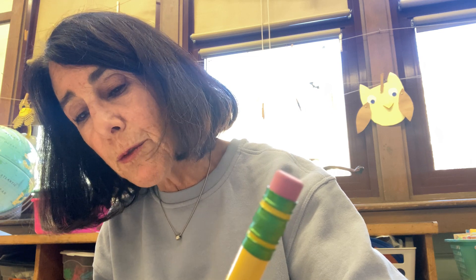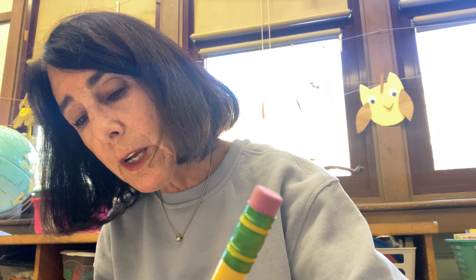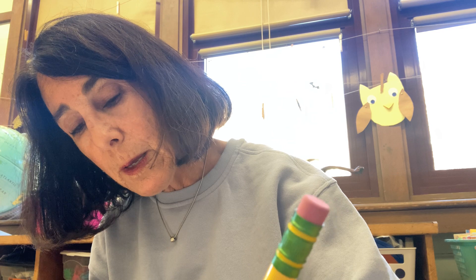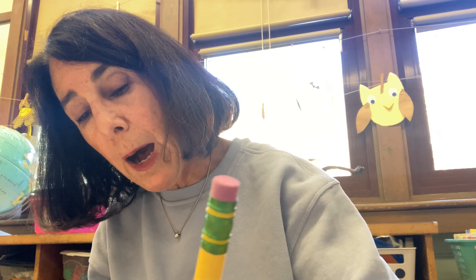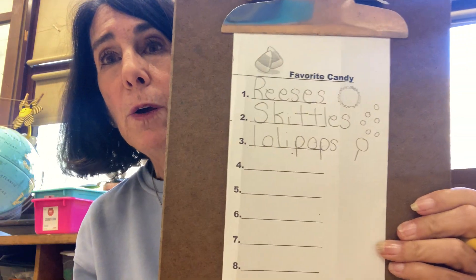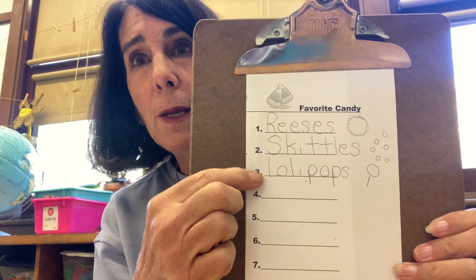Now I'm going to write them on my paper, taking my time. I'm going to write Reese's and draw a little peanut butter cup — just a circle with little ridges around it, and I'll color it brown. Then I'm going to write Skittles and draw little colored circles. Then I'm going to write lollipops — L-O-L-I-P-O-P-S — and draw a circle on a stick. So I have Reese's, Skittles, and lollipops. You might not like any of them, and that's okay.